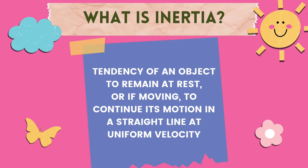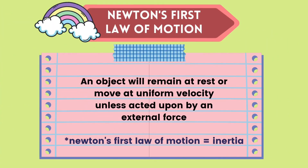Whenever we talk about inertia, there's a law that's commonly associated with this. This law is called Newton's first law of motion. Newton's first law of motion states that an object will remain at rest or move at uniform velocity unless acted upon by an external force. Newton's first law of motion is talking about the concept of inertia. Therefore, Newton's first law of motion can actually be used interchangeably with inertia. The only difference is inertia is the concept, while Newton's first law of motion is the law.